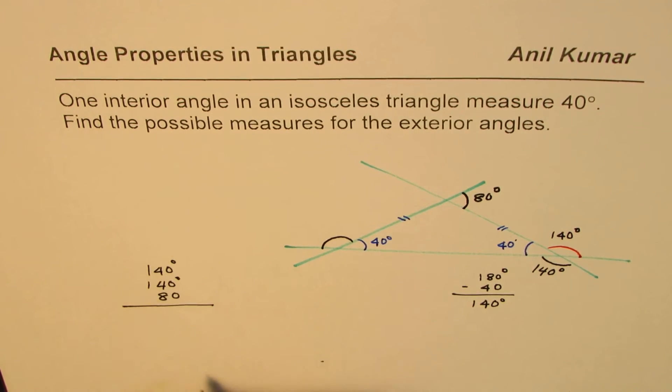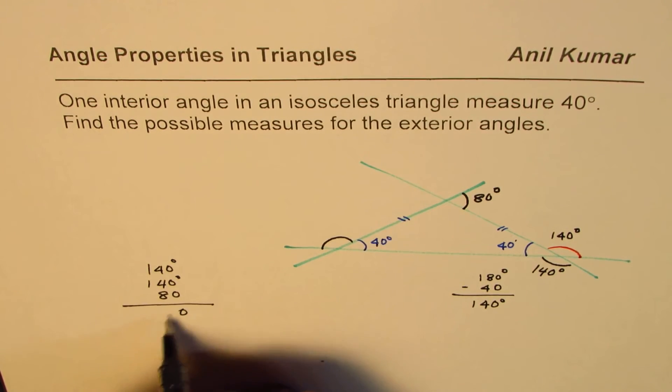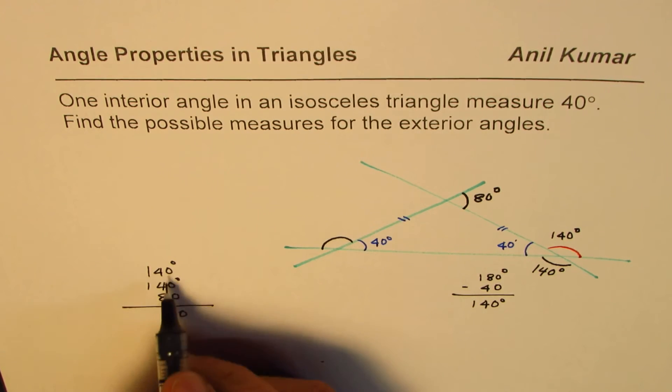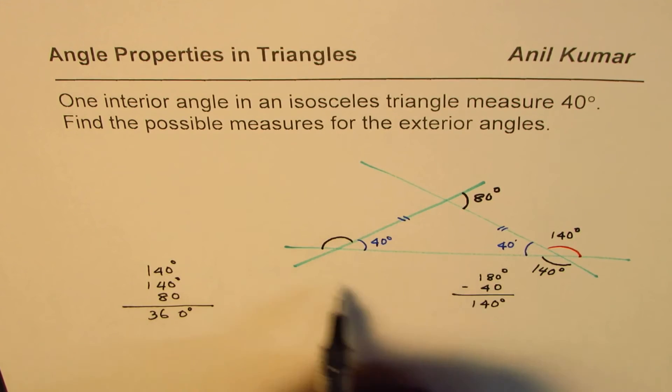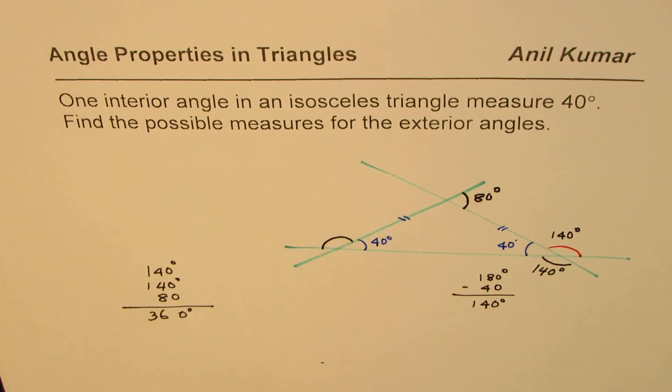As you can see, when you total them up, when you sum them up, what do you get? As expected, you should get 360 degrees. The sum should always be 360 degrees.